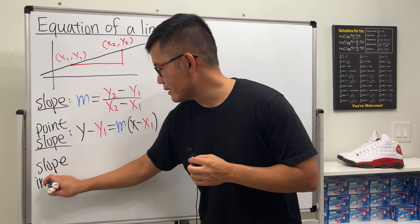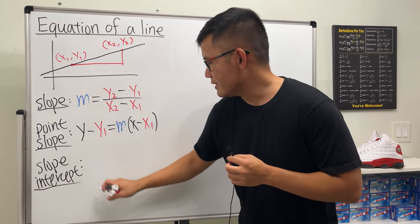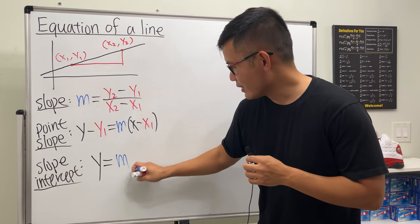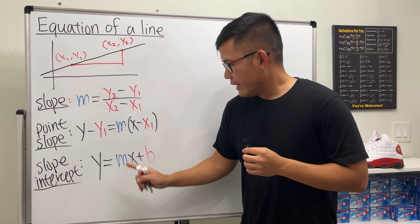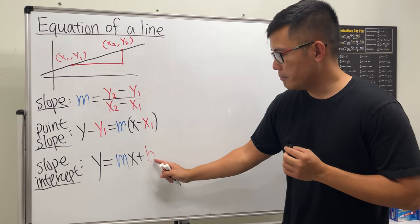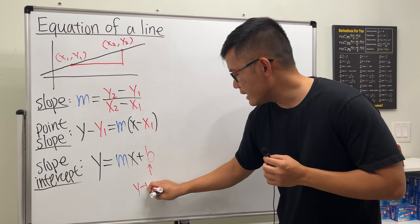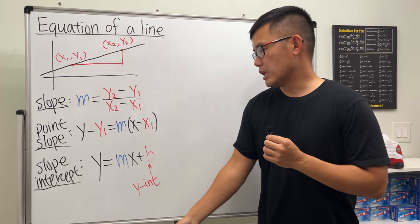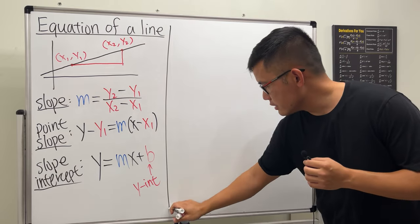The last form we need is the slope-intercept form: y = mx + b. Here m is the slope, and b is the y-intercept. Whenever you have an equation in this form, you can read off the slope and the y-intercept right away.